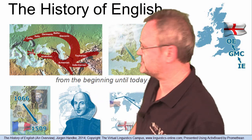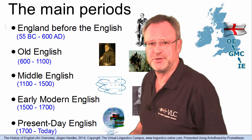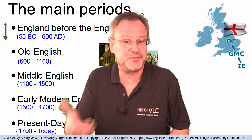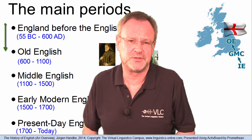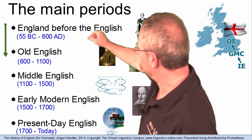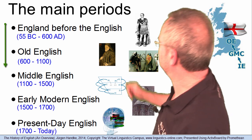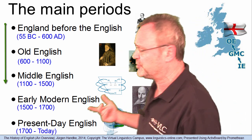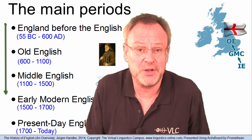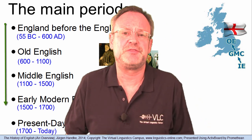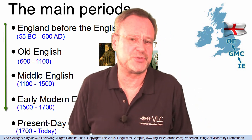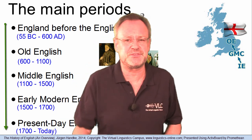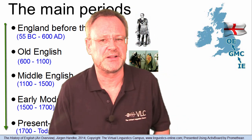The development of English can be subdivided into five periods: the beginning, that is, the time before the English arrived; the Old English period from 600 to 1100; the Middle English period from 1100 to 1500; the Early Modern English period from 1500 to 1700; and the period of present-day English from 1700 until today.